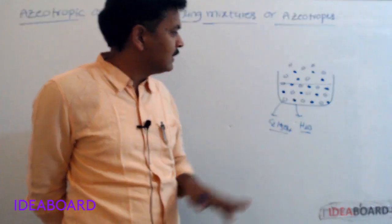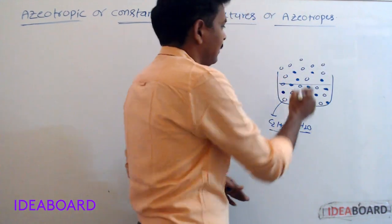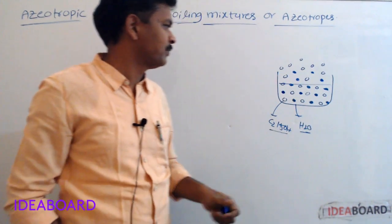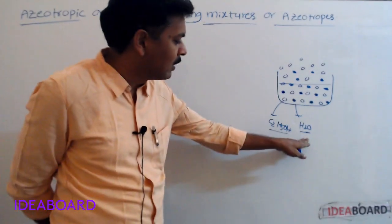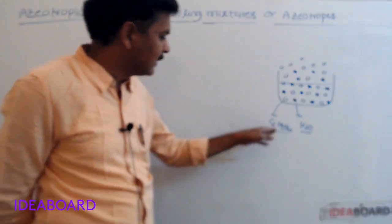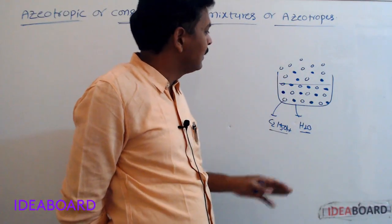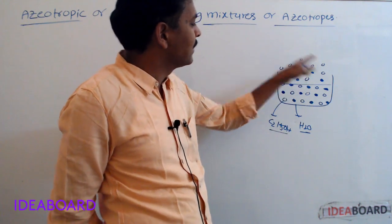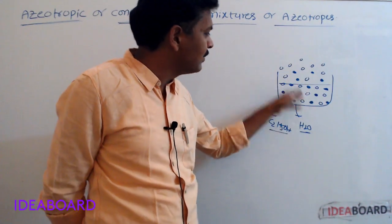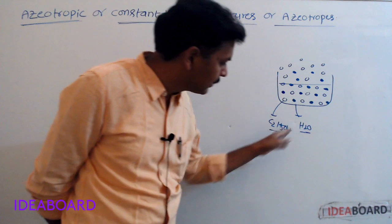Ethyl alcohol being more volatile means more ethyl alcohol molecules tend to undergo evaporation, so more ethyl alcohol vapor molecules are present in the vapor phase. Therefore, their composition is not the same in both the liquid and vapor phases.